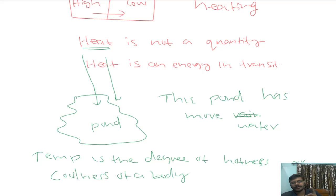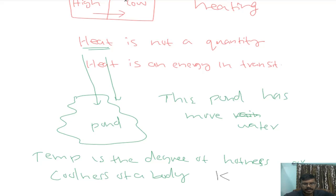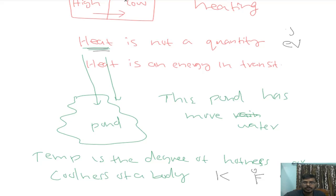If a body is hotter, that means it will have a higher temperature. Temperature determines the direction of heat flow when two bodies are in contact. The SI unit of temperature is Kelvin. Another unit is degree Fahrenheit and degree Celsius. For heat and energy, the SI unit is joule. You can also use electron volt, MeV, or KeV. So the SI unit of heat is joule and the SI unit of temperature is Kelvin.